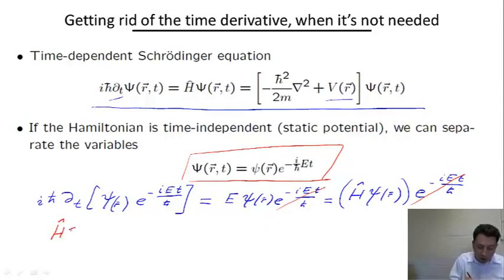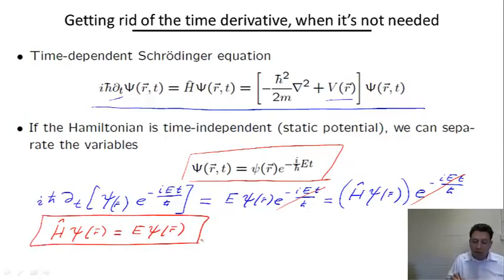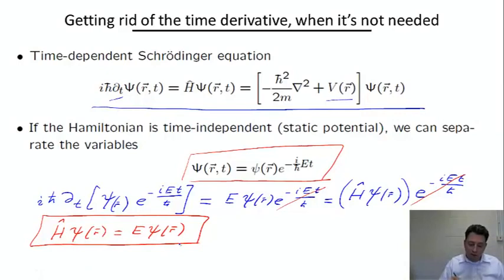We are left with the following equation: H acting on ψ(r) is equal to E times ψ(r). This is what is known as the time-independent Schrödinger equation or stationary Schrödinger equation. This category of problems, where an operator acting on a vector in some space reproduces the same vector multiplied by some number, are called eigenvalue problems. In the context of this mathematical theory, ψ represents an eigenvector, and E is an eigenvalue of the corresponding operator.